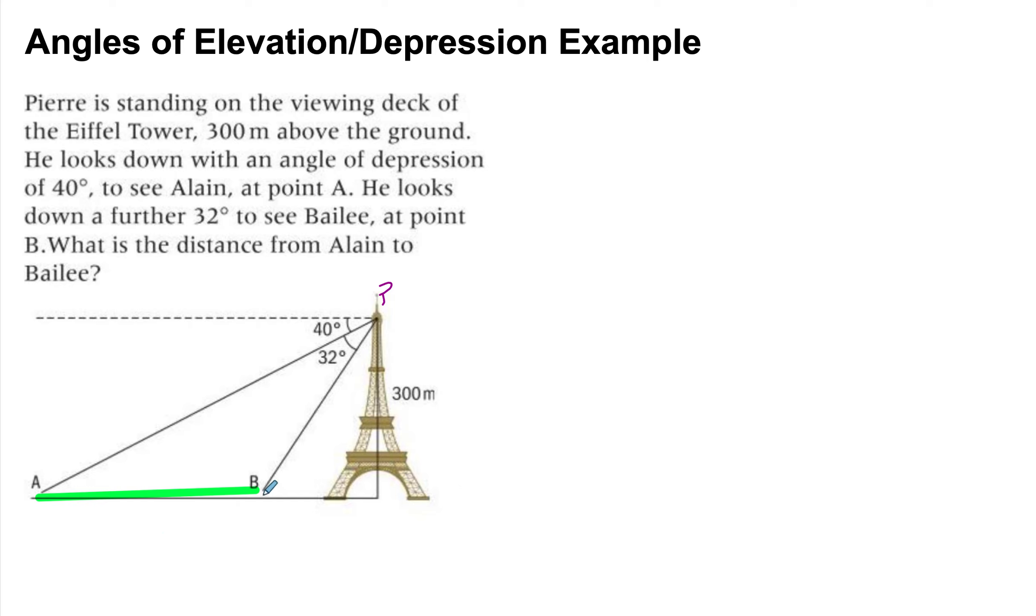If you haven't got to this point, you're not sure how to create this link between the two lengths, between the three lengths, then it's fine. So just take apart the construction that you have. The first construction is that we have an angle of depression of 40 degrees to see Alain.